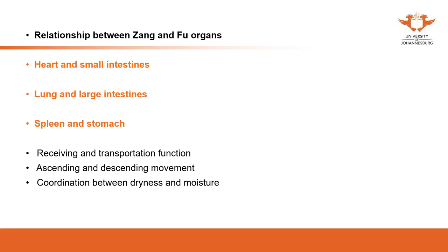The second aspect is ascending and descending movements. The spleen governs the rise of clear qi — it moves things upward. The stomach is in charge of descending — it moves food and water downward to the small intestine. One ascends, one descends; this should be balanced. This is the fundamental movement in the middle jiao, similar to the hinge of a door — the door opens and closes, changing position. One moves up and one moves down, creating circulation.